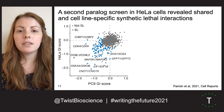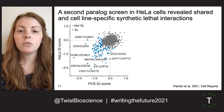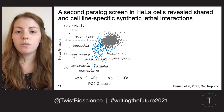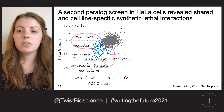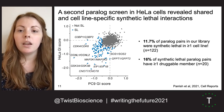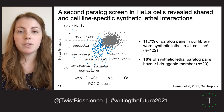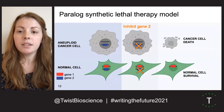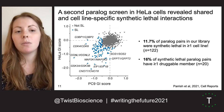We then did a second screen in HeLa cells, which are derived from cervical rather than lung tissue, to identify shared synthetic lethal interactions which had low genetic interaction scores in both cell lines, as well as those that seem to be more cell line specific. In total, just around 12% of the paralogs in our library were synthetic lethal, and 16% of those synthetic lethal pairs have at least one druggable member.